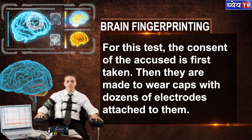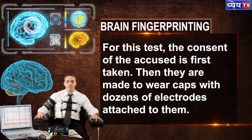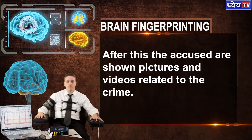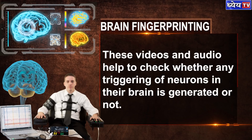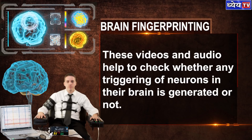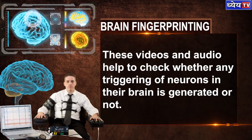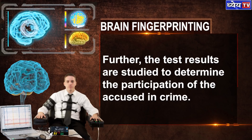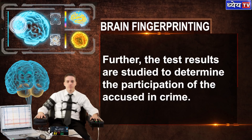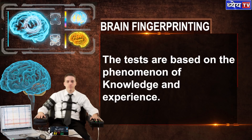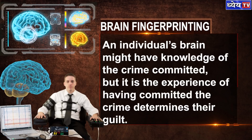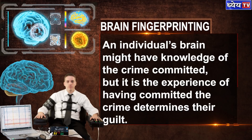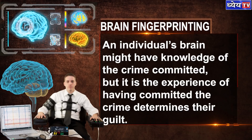The accused are made to wear caps with dozens of electrodes attached to them. After this, they are shown pictures and videos related to the crime. These videos and audio help to check whether any triggering of neurons in their brain is generated or not. The test results are then studied to determine the participation of the accused in the crime. The tests are based on the phenomenon of knowledge and experience — an individual's brain might have knowledge of the crime committed, but it is the experience of having committed the crime that determines their guilt.